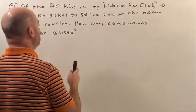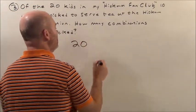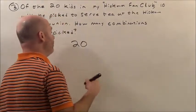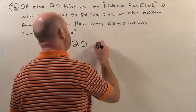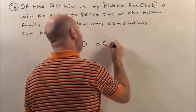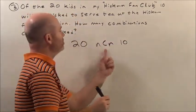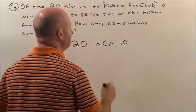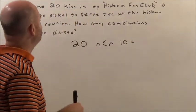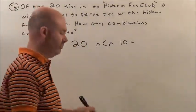So what I'm going to do is 20 choose 10. On the calculator — we use the Texas Instrument 83 or 84 Plus — we're going to hit the math button, then move over to PRB and pick nCr, which stands for combination, then enter 10. So that's 20 nCr 10. When we do that, that answer will be how many different ways we can pick these 10 kids for serving tea at the Hickam Family Reunion.